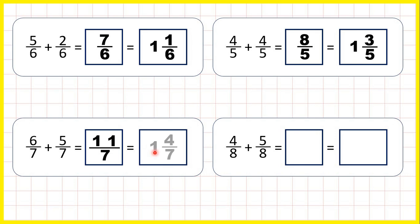As a mixed number, that's 1 and 4 sevenths, because 11 divided by 7 is 1 remainder 4.